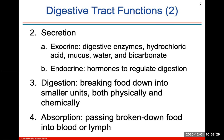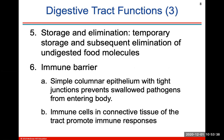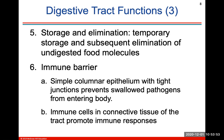Digestion specifically means breaking food down into small units, both physically and chemically. Absorption is passing these broken-down food components into the blood or lymph. Storage and elimination functions involve temporary storage and subsequent elimination of undigested food molecules. The immune barrier is a simple columnar epithelium with tight junctions that prevents swallowed pathogens from entering the body, and we have immune cells in the connective tissue surrounding the GI tract to help promote immune responses.